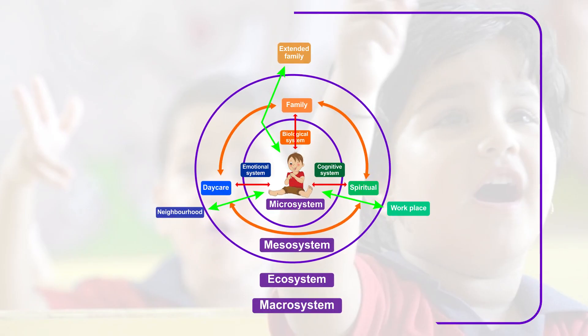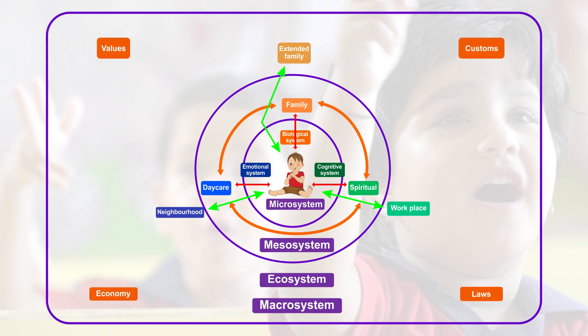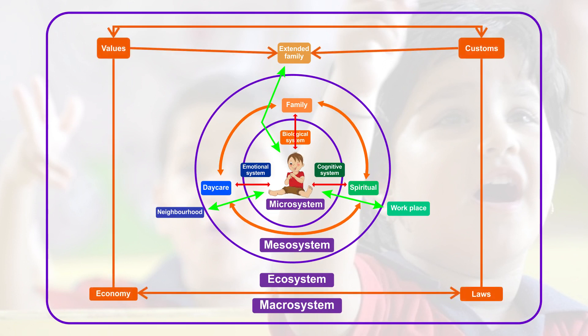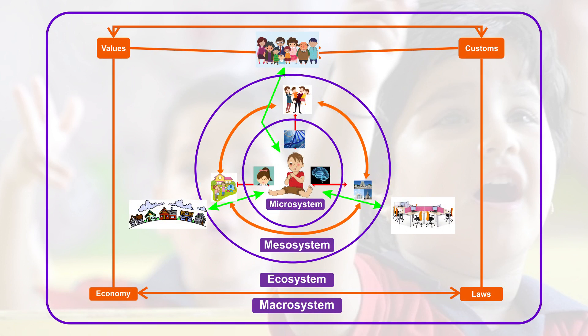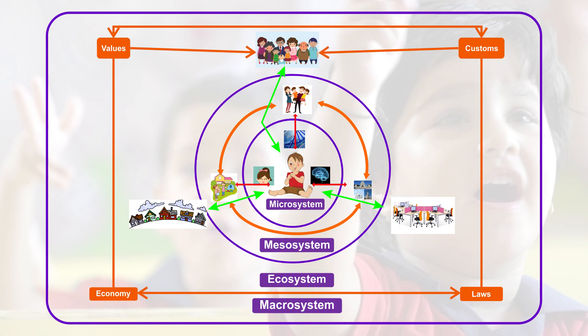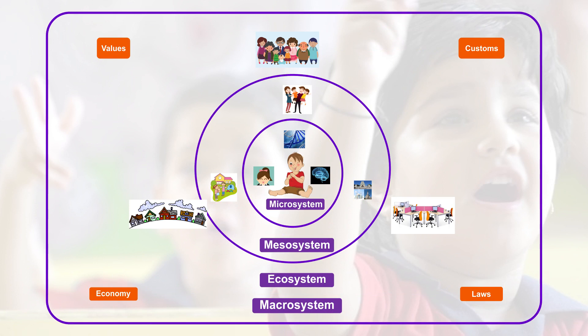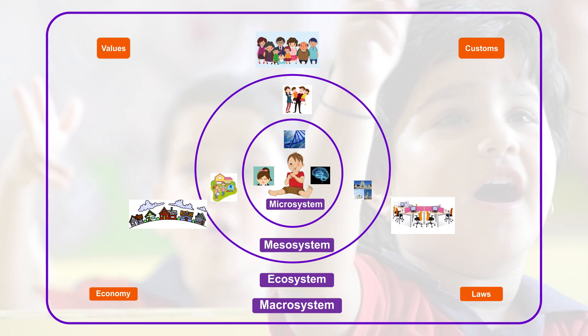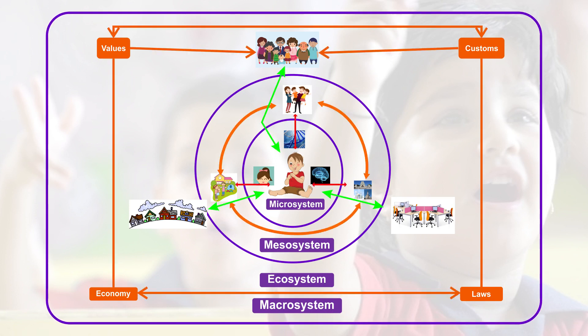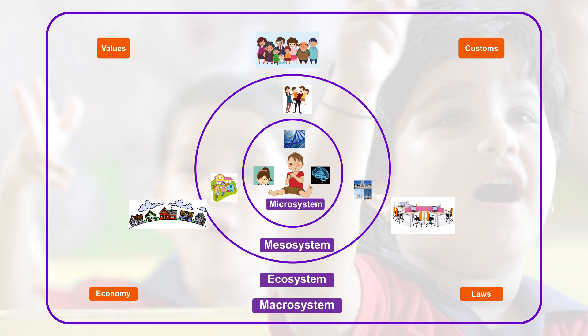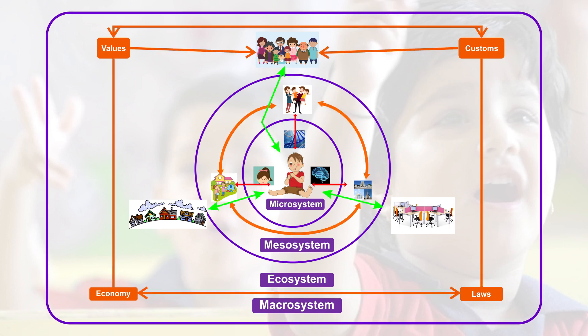The fourth system is the macrosystem. The macrosystem describes the cultural context of the individual and is considered the largest and most remote group of people and places that significantly influences a child's life. It involves cultural patterns and values, political and economic systems. For example, a child born into a poor family facing hardship in making ends meet has a different kind of development compared to a child born into a middle-class or upper-class family.